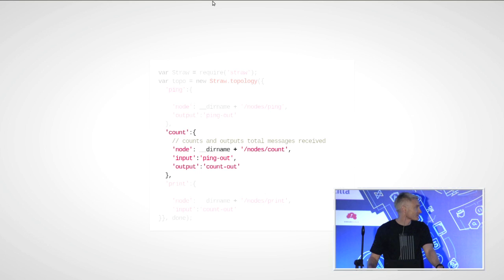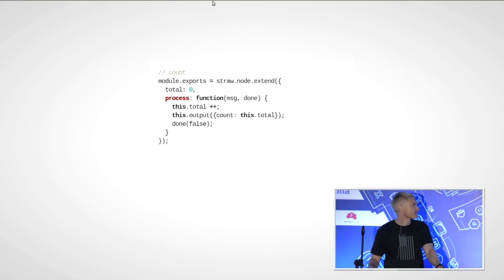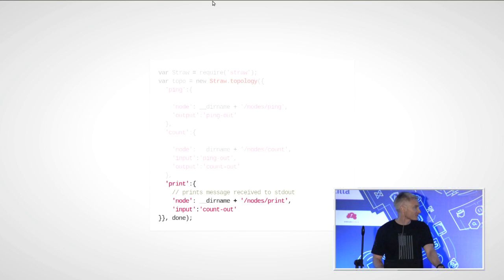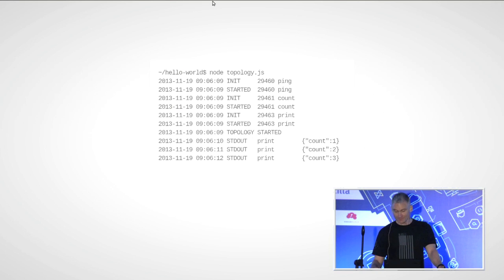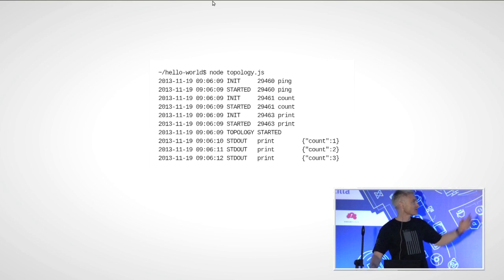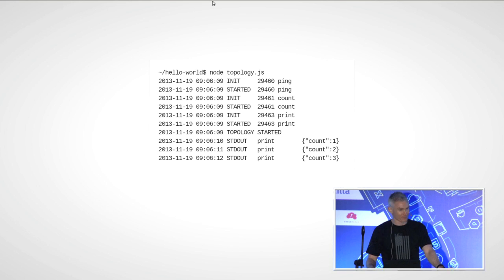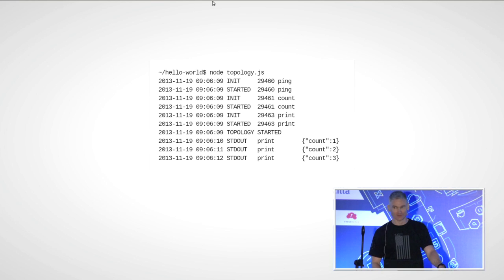The count module is simpler: it receives input from ping and sends output through count_out. Whenever it receives a message it bumps up a total and outputs that total. The print node is simpler still — it just receives input and prints it to the console. Running the Hello World app with node topology.js, you see each node boot up and confirm it's finished starting. Then you see ping, count, and print cycling continuously — ping count print, ping count print — that's the topology in action.